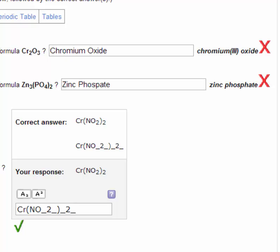Looking at the top of the screen, Cr2O3 is chromium(III) oxide. You were close, you just needed to include the Roman numeral for the charge on each chromium.